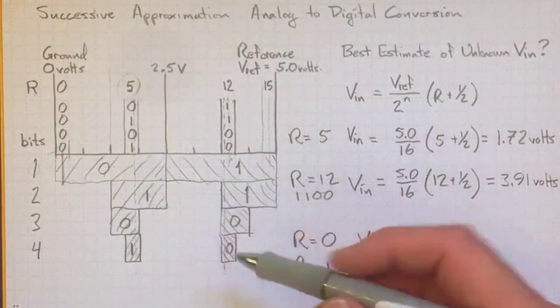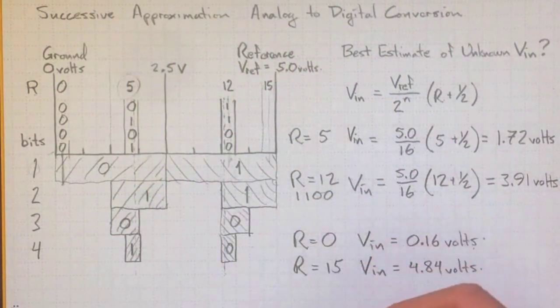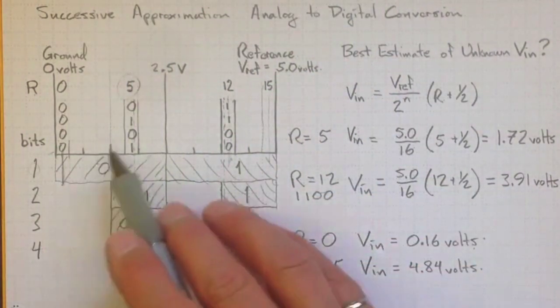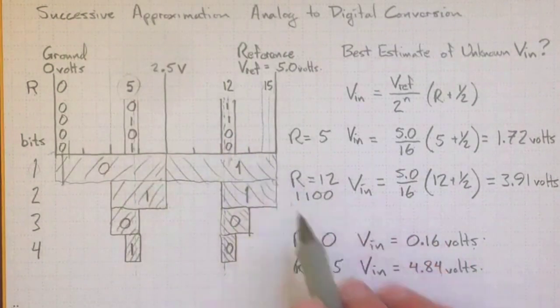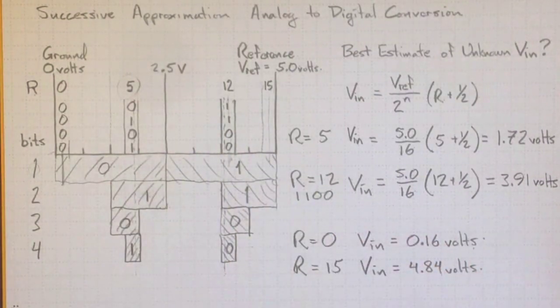So that's how we can estimate an actual voltage input based on our successive approximation analog to digital conversion. And the more bits we have, if we have more than 4, if we have 10 for instance, the more divisions we'll be able to separate the voltage into, and the more accurate our measurement will be.